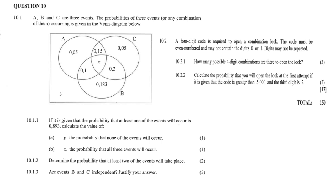And then 10.2, the counting principle. A four-digit code is required to open a combination lock. The code must be even numbered and may not contain the digits 0 or 1. Digits may not be repeated. 10.21: how many possible four-digit combinations are there to open the lock? And 10.22: calculate the probability that you will open the lock at the first attempt if it is given that the code is greater than 5,000 and the third digit is a 2.